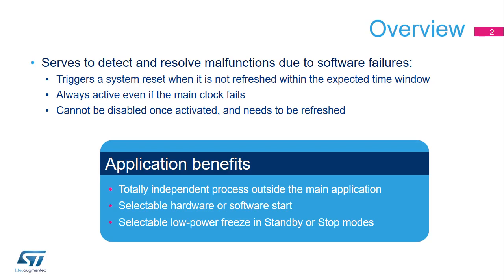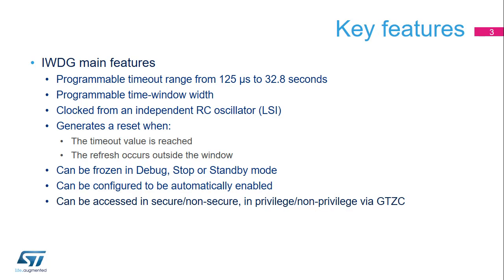One of the main benefits for applications is its ability to run independently from the main clock. The Independent Watchdog offers a wide range of timeout values, from 125 microseconds to 32 seconds. It is clocked by a 32 kHz RC oscillator, which cannot be disabled when the Independent Watchdog is enabled. It generates a reset when the program timeout value elapses, or when a watchdog refresh occurs outside a program time window. This window feature is optional and not present in all Independent Watchdogs.